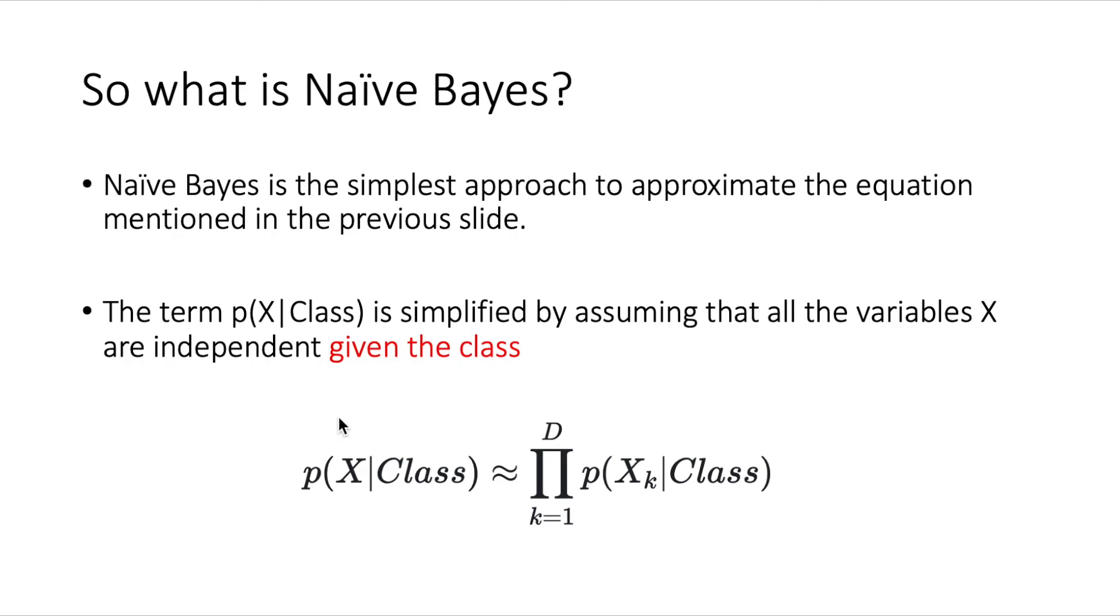So if, for example, x had 10 dimensions, we will replace one multidimensional distribution over 10 variables by the product of 10 unidimensional distributions, one per variable. This is a very strong assumption.